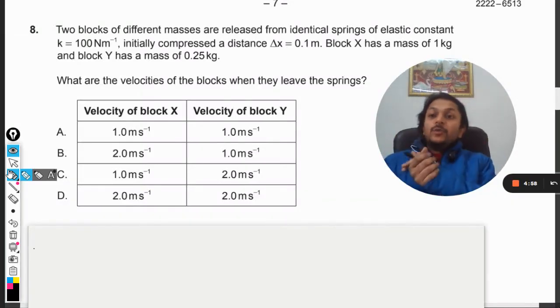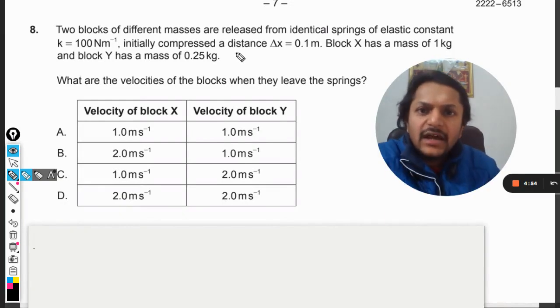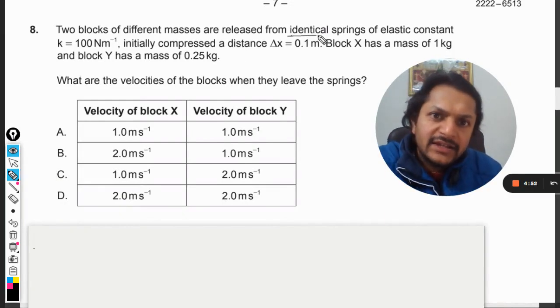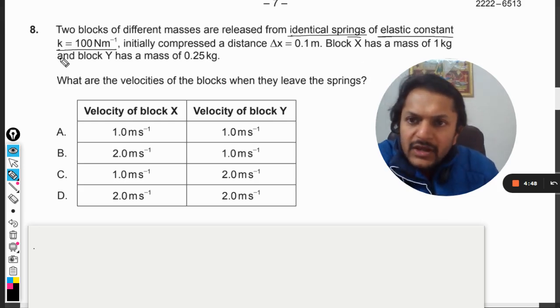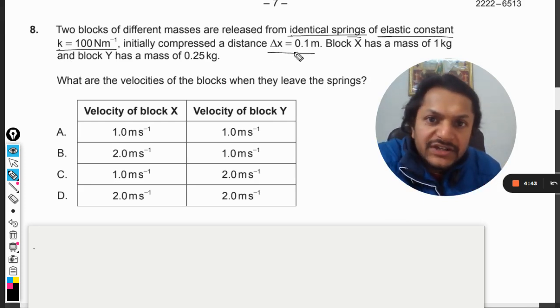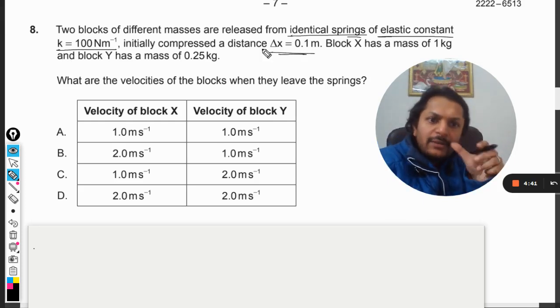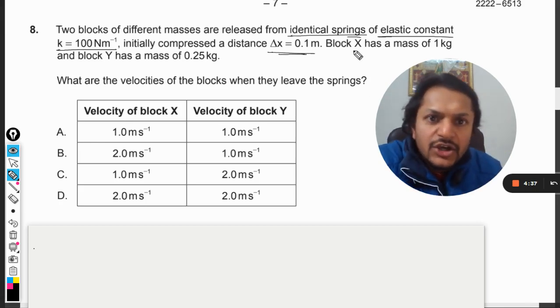Okay dear students, let us see what is there in this question. Two blocks of different masses are released from identical springs of elastic constant k. Initially compressed to a distance of 0.1 meters. This is the initial position and both of them are now released. The spring is stretched and then released.